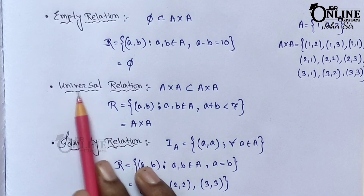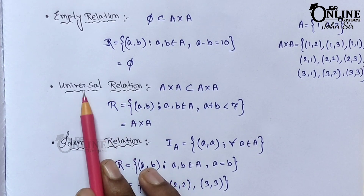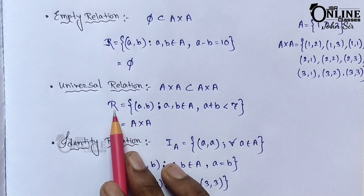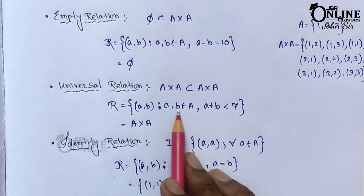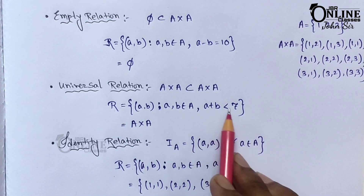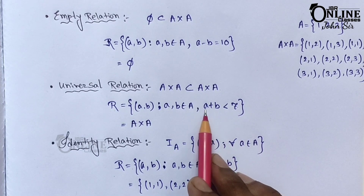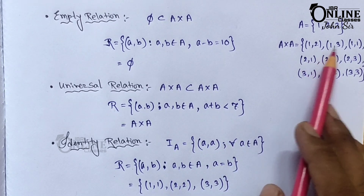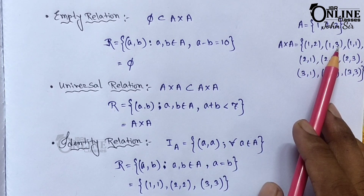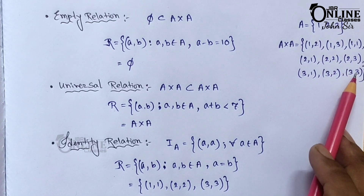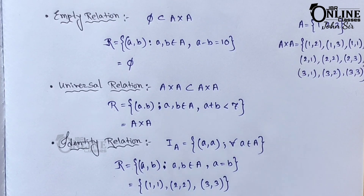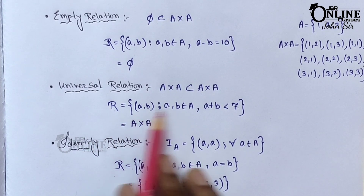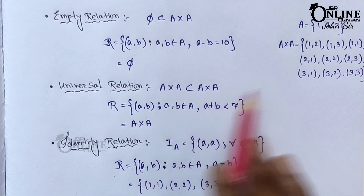The next one is the universal relation. Universal relation means A×A is a subset of A×A — that is, the relation includes all elements. For example, the relation R = {(a, b) : a + b < 7}. If you add any two elements from A = {1, 2, 3}, like 1+3=4, 3+3=6, 2+1=3, all are less than 7. So all elements belong to A×A — that is called the universal relation.